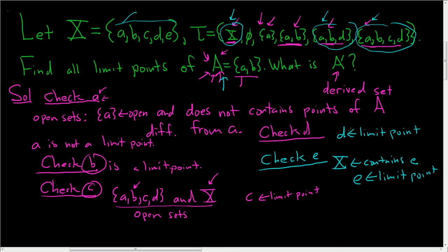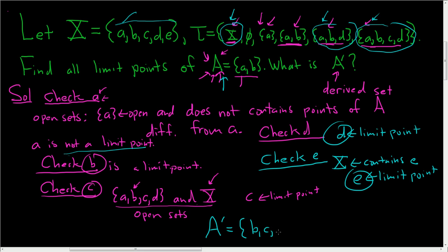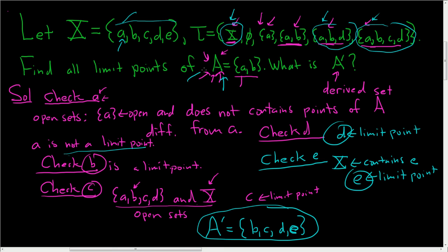We now have all of the limit points. The derived set is the set of all limit points. A was not a limit point, but B, C, D, and E are. So the derived set is {B, C, D, E}. To recap: for each point, you look at all the open sets containing it and ask whether each one contains a point of A different from the point you're considering. For little a, we found an open set containing only little a, so it was not a limit point — but the rest turned out to be.